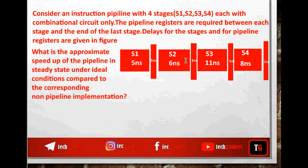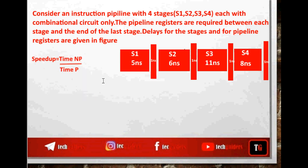We have a four-stage pipeline. The processing delay within each stage is given, and we are using intermediate buffers between the stages and at the end of the last stage. The buffer delay is also given. We need to find the speedup of the pipeline with respect to the non-pipeline implementation. The speedup is equal to the time taken for the non-pipeline approach divided by the time taken for the pipeline approach.